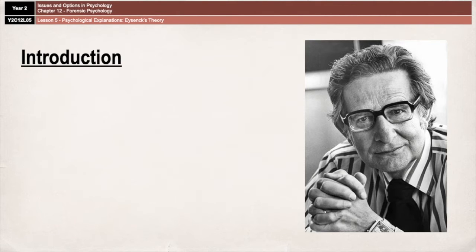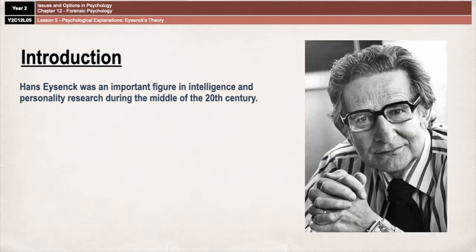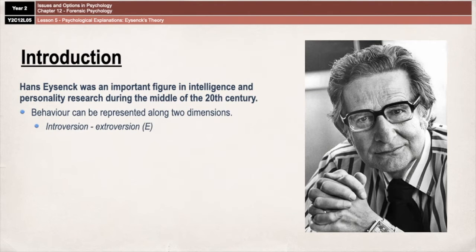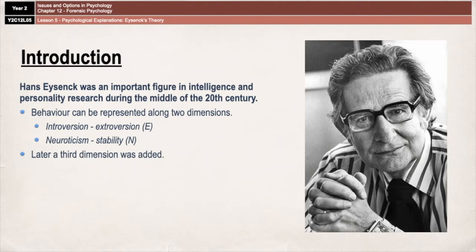His personality theory proposes that behaviour can be represented along two dimensions: extroversion-introversion, which we will just refer to as E, and neuroticism-stability, which we'll refer to as N. These two dimensions combine to form a variety of personality characteristics and traits, including the criminal personality. A little bit later in his research, he also added a third dimension, which was psychoticism-sociability, referred to as P, and that also plays a big role in offending behaviour.